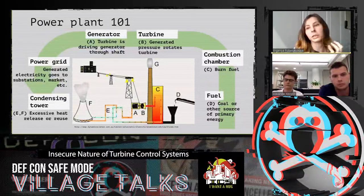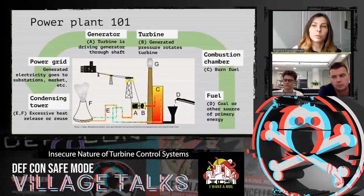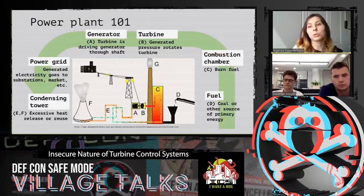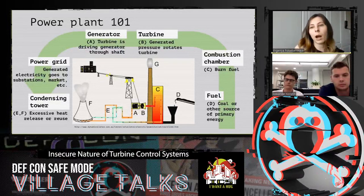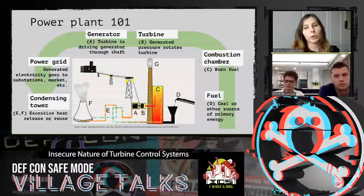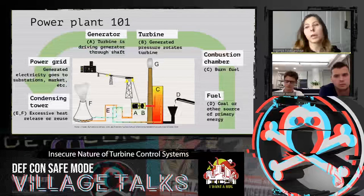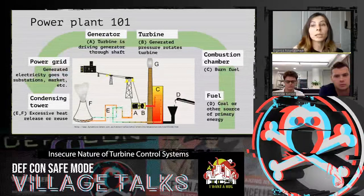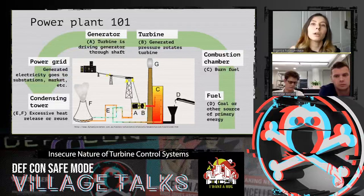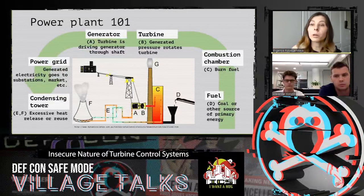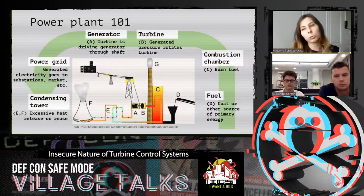First, you will need some fuel — here is coal, for example. You put fuel into a combustion chamber, put it on fire, and it generates pressure to rotate a turbine. The turbine is connected to an electricity generator through a shaft, so when it's rotating the generator starts generating electricity. Electricity doesn't go straight to your house — first it goes to a special place called the power grid, which knows information about market demands and distributes electricity to consumers. During the burning process you can have a lot of excessive heat — called waste heat — and there are different ways to approach it: you can release it to the air through a condensing tower, or reuse it for recuperation, sending steam to a turbine to generate more electricity.